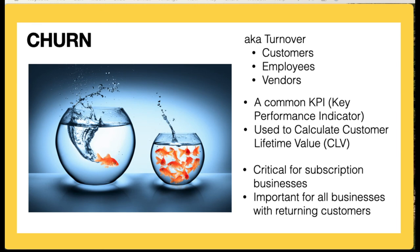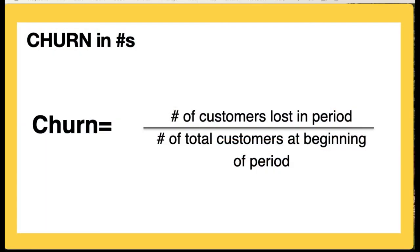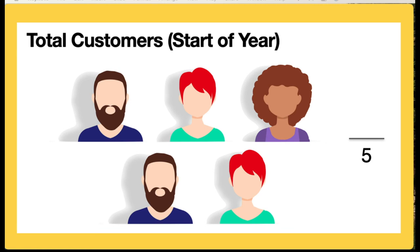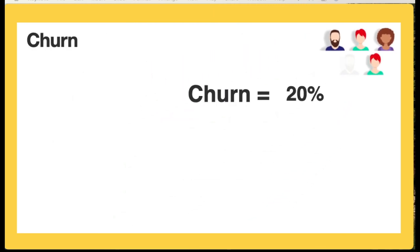So let's get into a very basic calculation of churn. Churn can be calculated a number of ways. We can calculate it based on raw numbers: the number of customers lost in a period divided by the number of total customers at the beginning of a period. For example, I have five total customers at the start of the year, I lose one — so I've lost one out of five — giving me a churn rate of 20%.